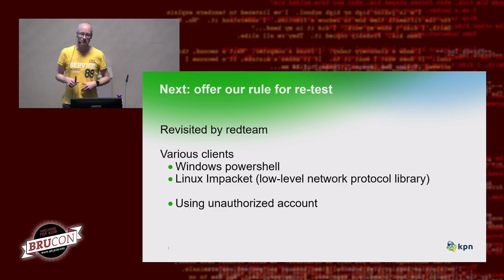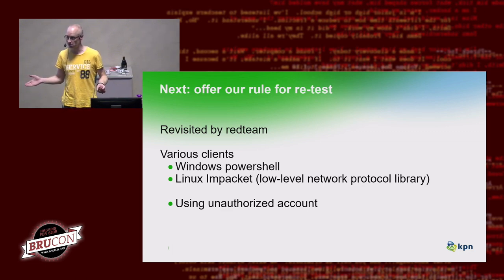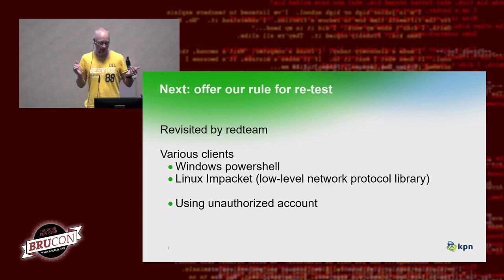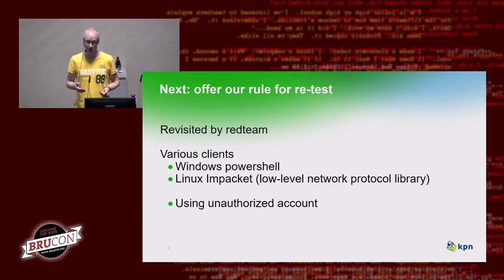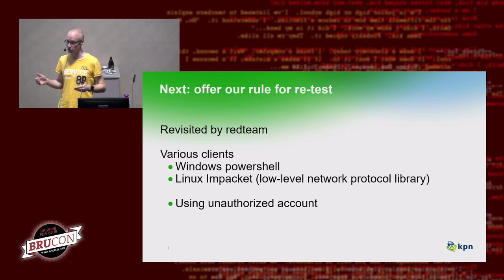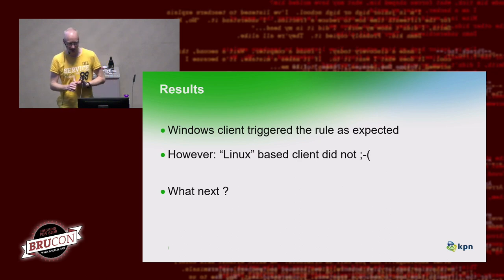Our next step was to revisit our red team to conduct another test, to get around my own blind spots. The red team used several clients: Windows PowerShell as we had done before, and an open-source network protocol library called Impacket. He used an unauthorized account. From this test it appeared that the Windows client triggered the rule as expected. However, using the Linux client with the open-source library, it did not trigger.